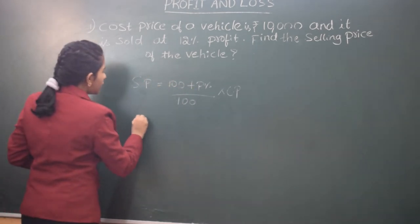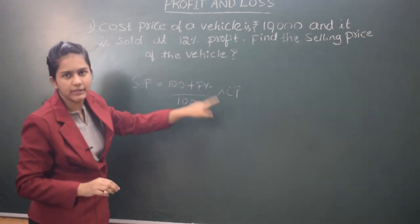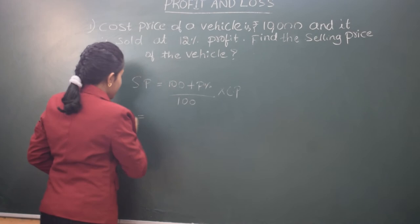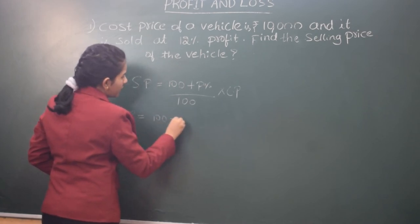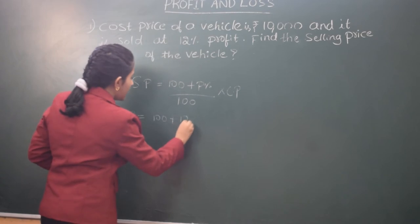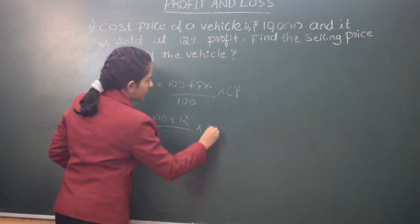So we should find the selling price and we have the profit percentage and CP in the question. So SP is equal to 100 plus the profit percentage is 12 divided by 100 into CP is 10,000.